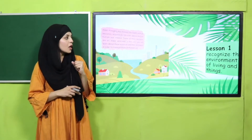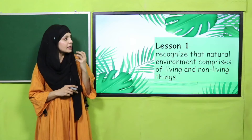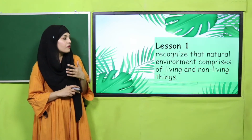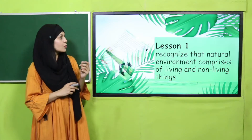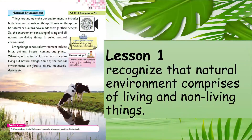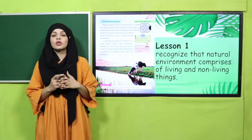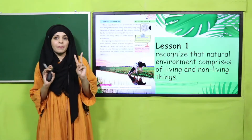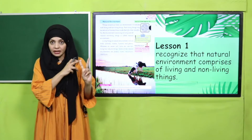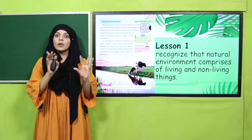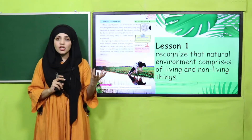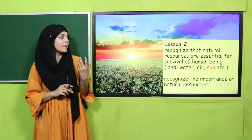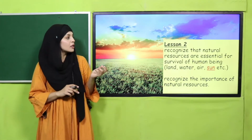When we will start Lesson Number 1, the students will recognize that the natural environment comprises of living and non-living things, and the page included is page number 86. Jab lesson number 1 hum start kareinge toh hum discuss kareinge ke jo humara natural environment hai wo do tarah ki cheezo se milke bana hai — living things yaani jaandar cheezain aur bejaan cheezain. We will have certain examples and pictures, and we will really have fun in this lesson.